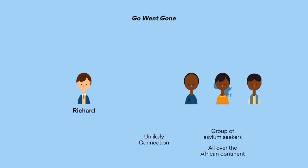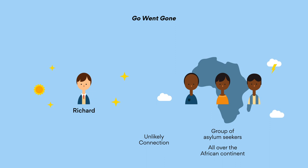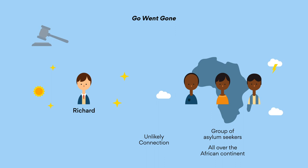Go, Went, Gone revolves around an unlikely connection between a retired university professor, Richard, and a group of asylum seekers who come from all over the African continent. While he's enjoyed a life of stability and privilege as a white male citizen, the lives of these asylum seekers could not be more different. No matter where they are in the world, uncertainty seems to follow. Richard initially sets out to learn their stories, but he is very quickly drawn into their histories of tragedy, as well as their dreams for the future. However, the more he helps them, the more he realizes what he's up against.